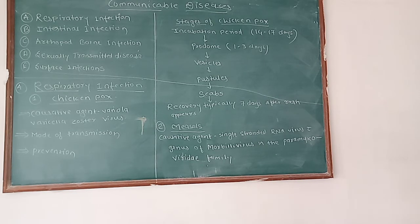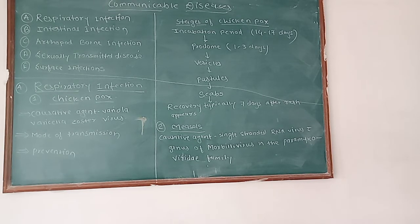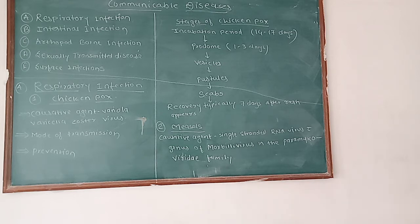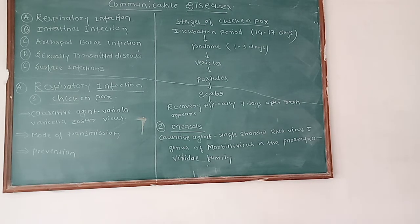The trachea, windpipe, and bronchial passages become inflamed because of the infection of the lower respiratory tract. Lower respiratory tract infections are subdivided into two types: first is bronchitis and second is pneumonia.